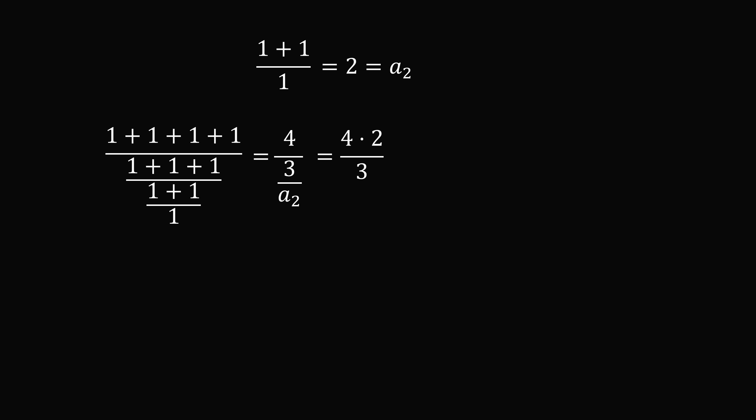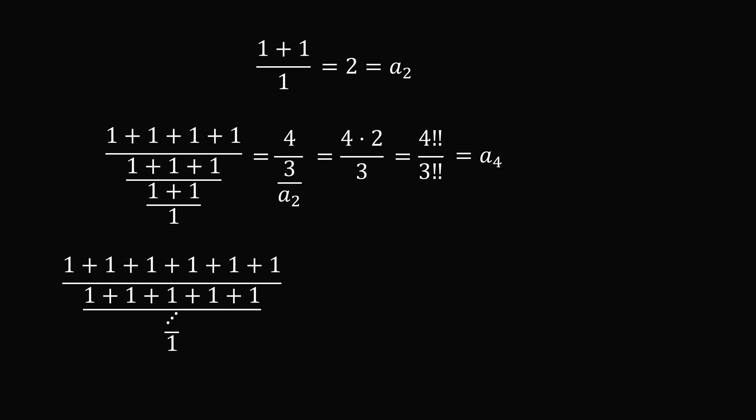4 times 2 is 4 factorial except we've skipped every other number. And we have 3 times 1, which is 3 factorial except we skip every other number. This is written in shorthand as 4 double factorial and 3 double factorial. So a4 is equal to 4 double factorial divided by 3 double factorial.